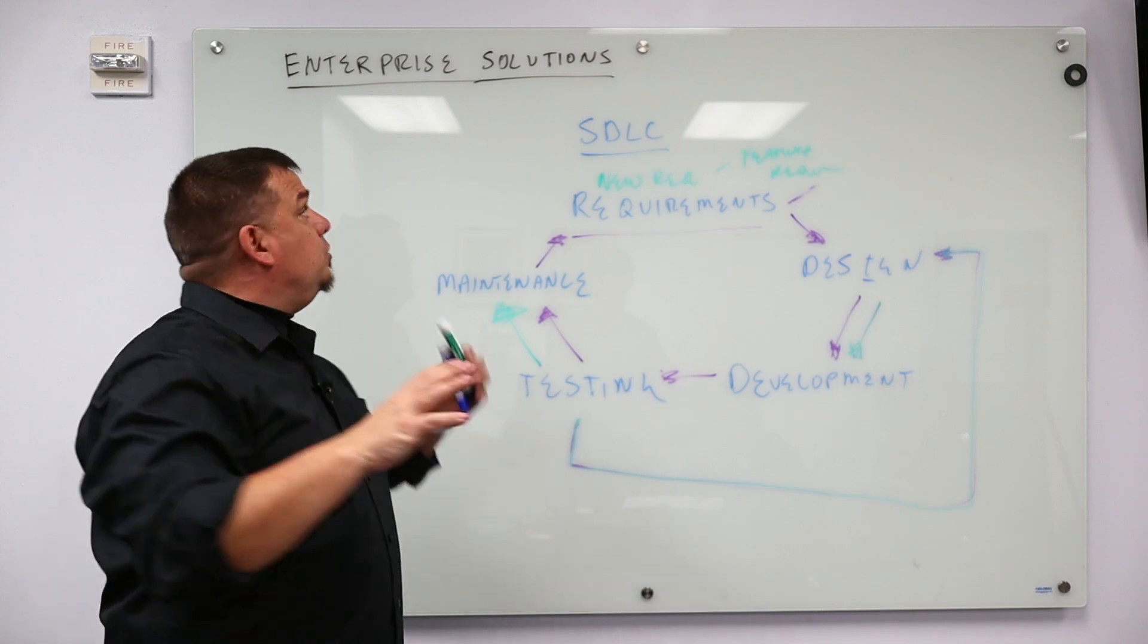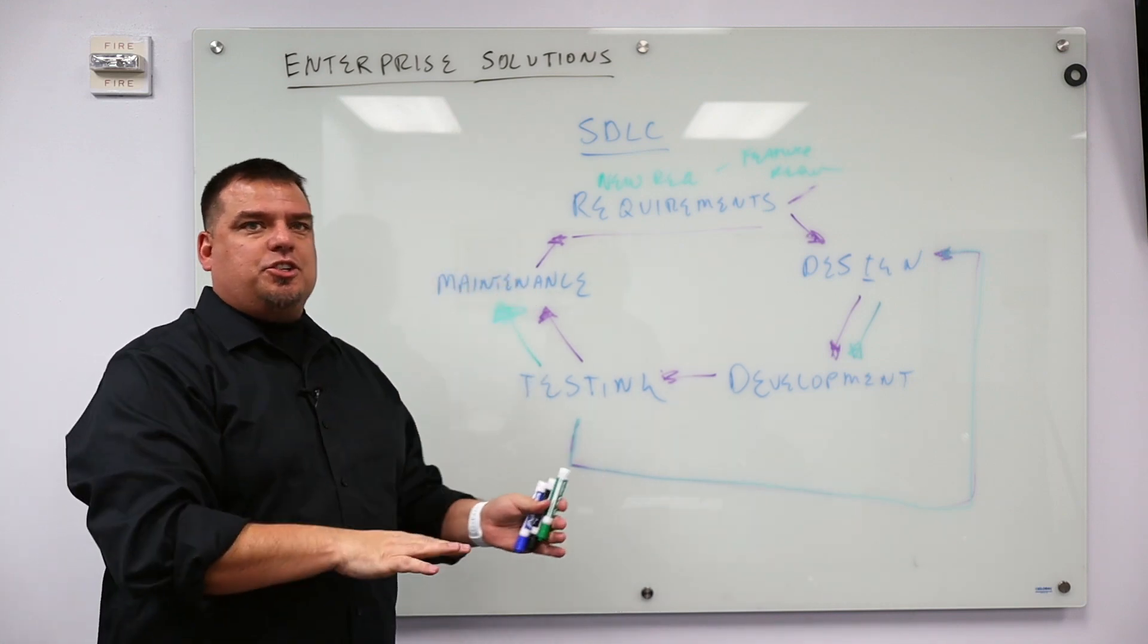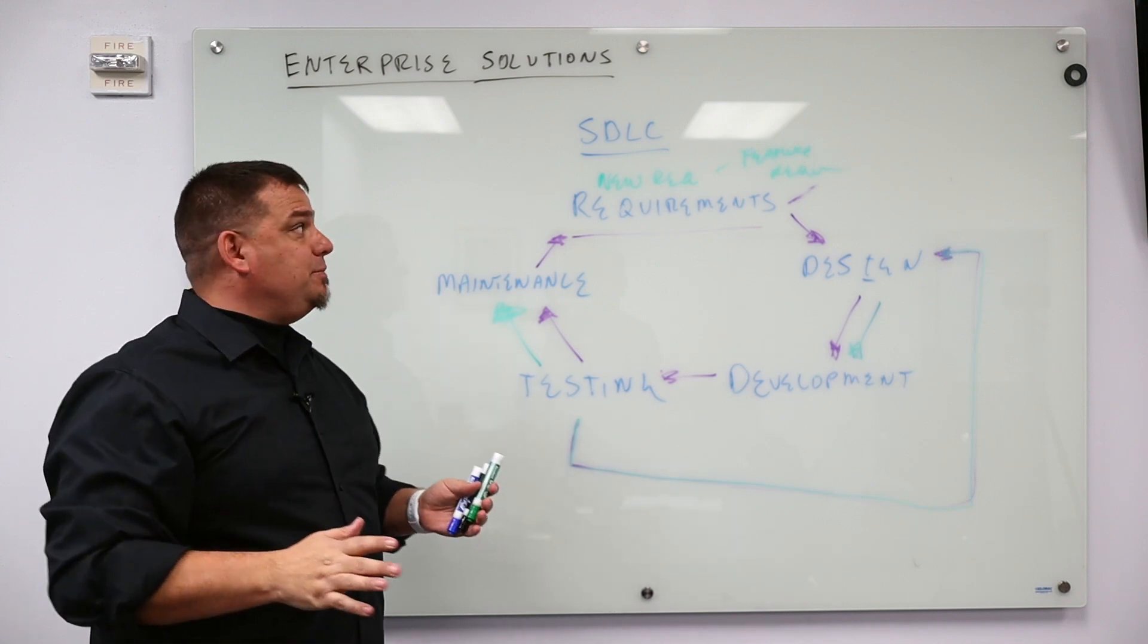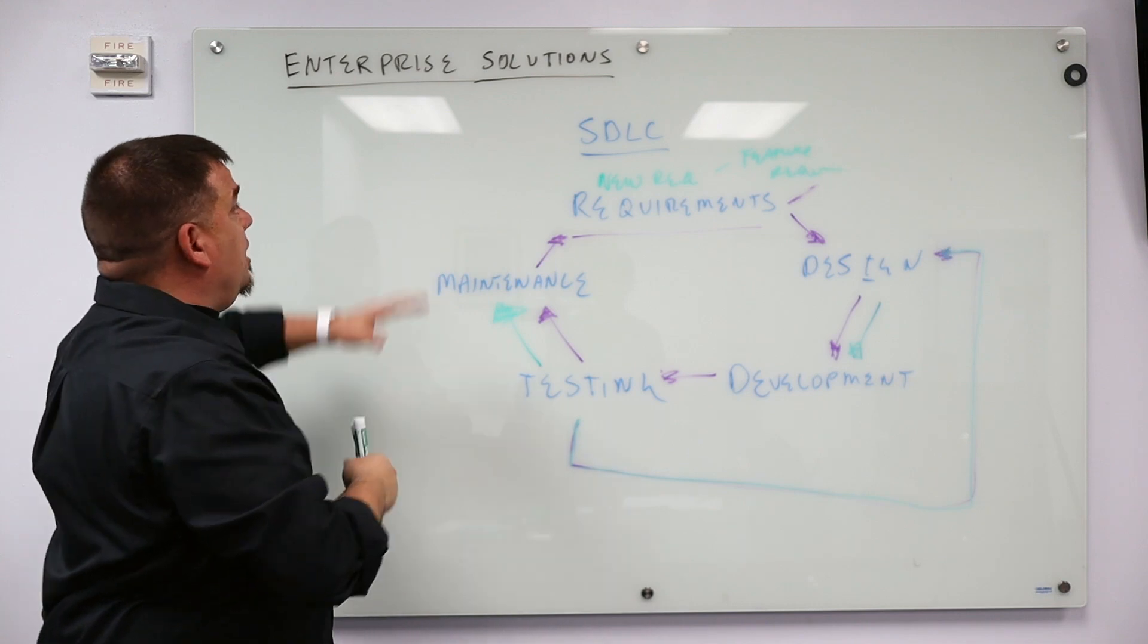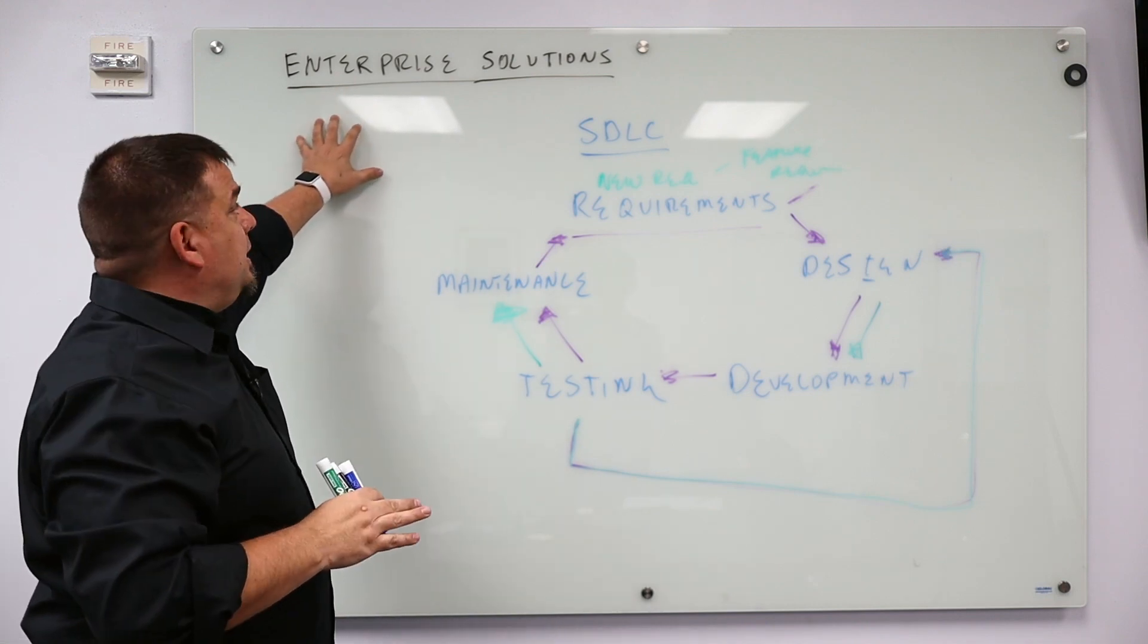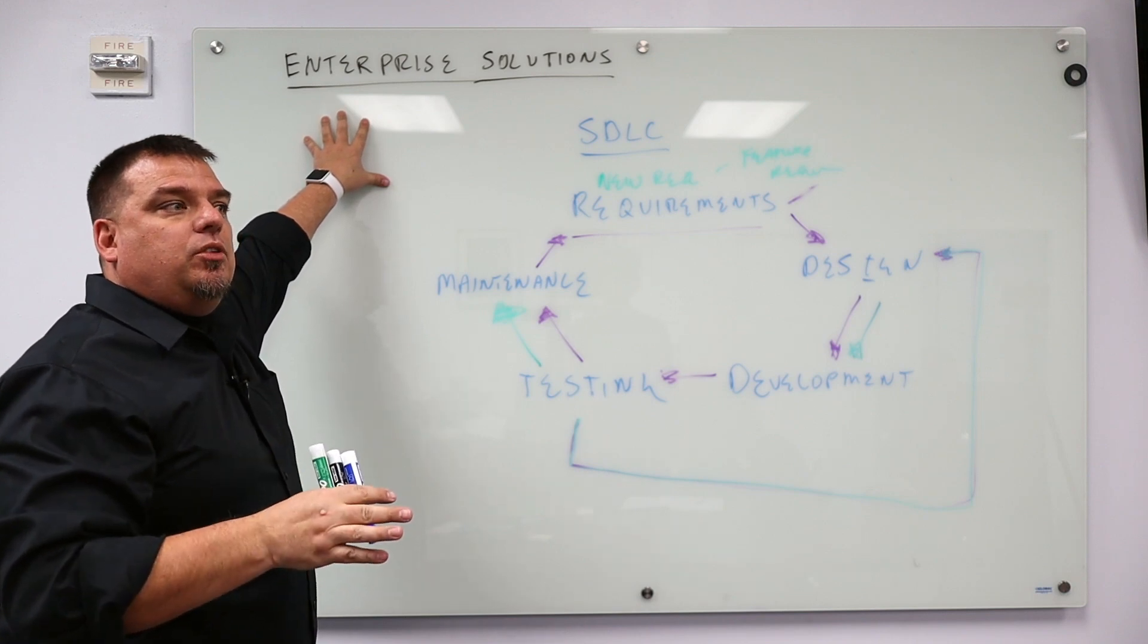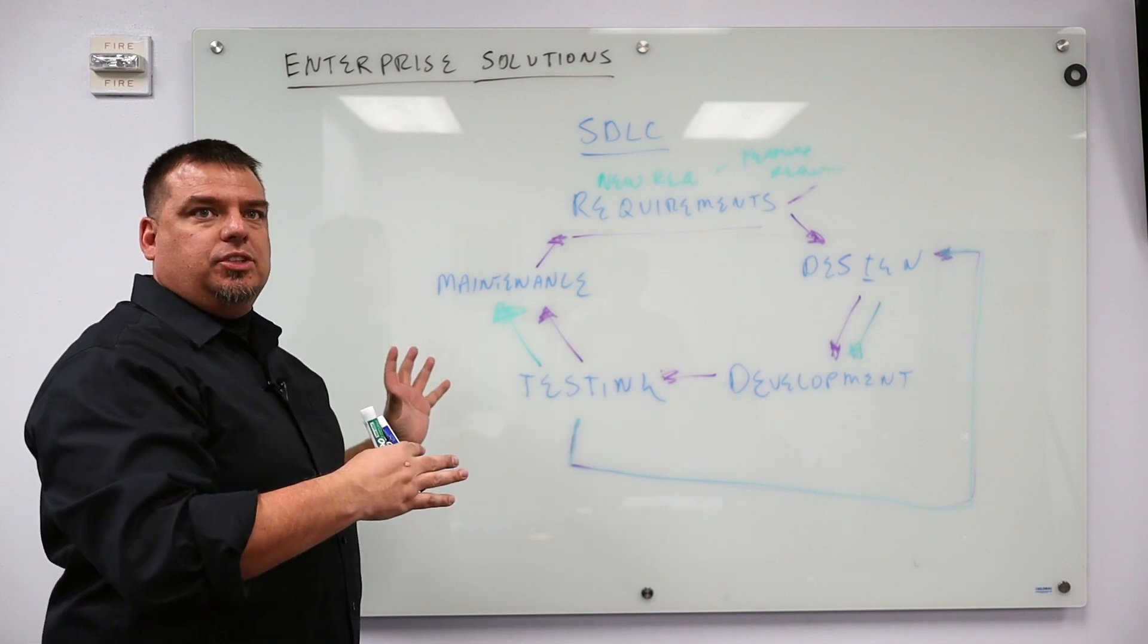In order for us to do an enterprise solution, the first thing we have to do is start thinking like a software developer. Even if you're just a controls engineer, even if you just write PLC programs, you still have to start thinking like a software developer in order to deploy an enterprise solution. The reason we're talking about it this way is because we want to teach people how to deploy IIoT solutions, which are almost always enterprise solutions.